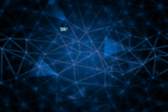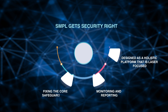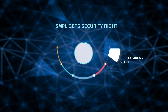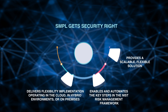Unlike other security products, Simple Get Security Right is designed as a holistic platform that is laser-focused on not only monitoring and reporting, but actually fixing the core safeguards and countermeasures that are the main targets of nefarious actors. It seamlessly integrates a digital system security plan or other security documentation, provides a scalable and flexible solution, enables and automates the key steps in the NIST risk management framework, delivers flexibility in implementation operating in the cloud, hybrid environments, or on-premises, and enables cost savings compared to labor-intensive manual processes and corrective action.